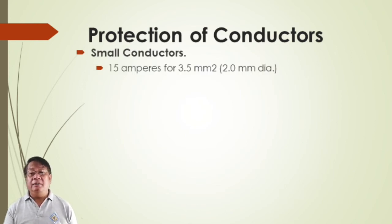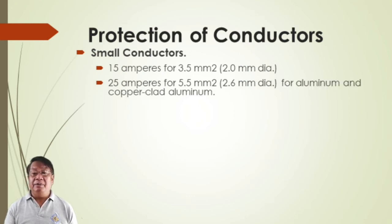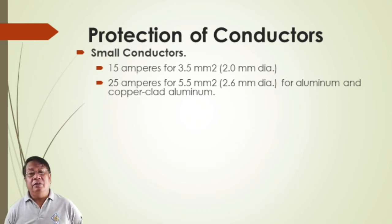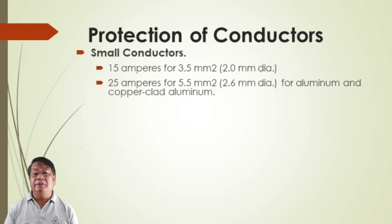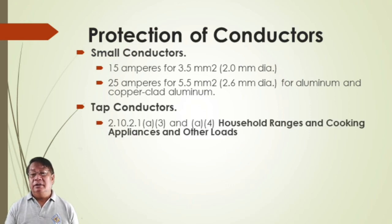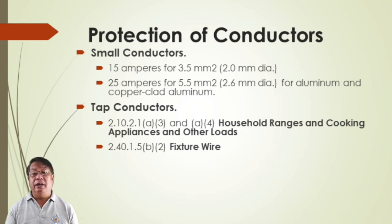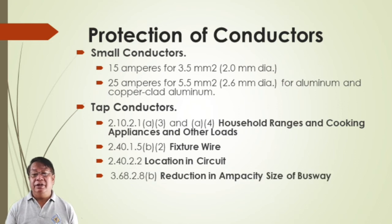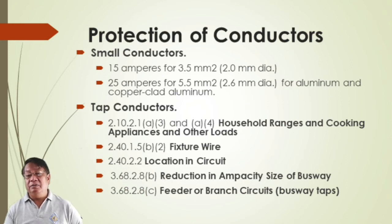For aluminum small conductors: 15 amperes for 3.5 mm² and 25 amperes for 5.5 mm². For house ranges, cooking appliances, and other loads, refer back to Table 2.10.2.1. Standard ampere ratings for fuses and fixed-trip circuit breakers available in the market include: 15, 20, 25, 30, 35, 40, 45, and so on — possibly up to 6,000 amperes.